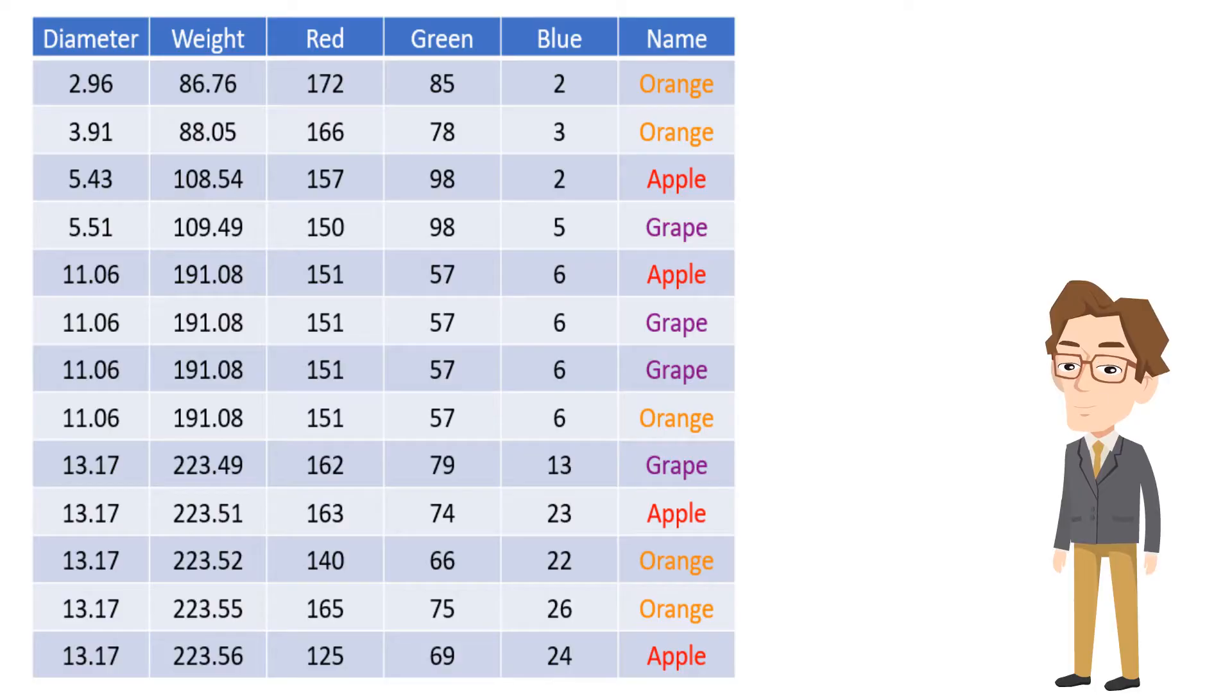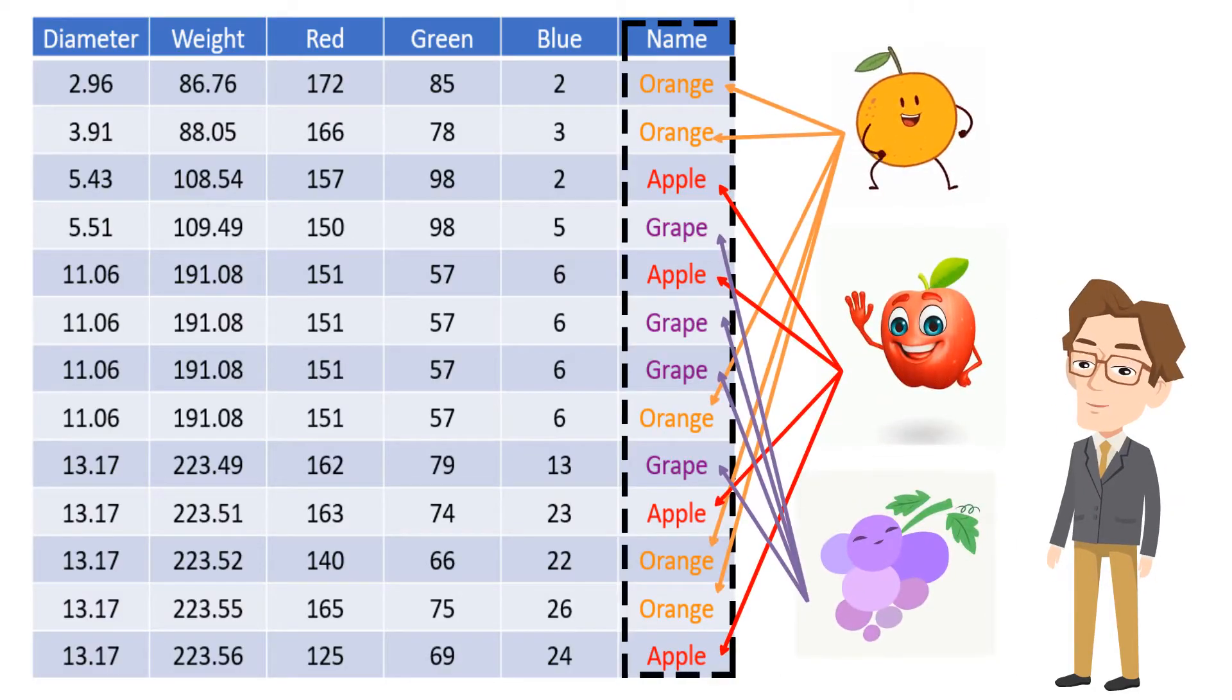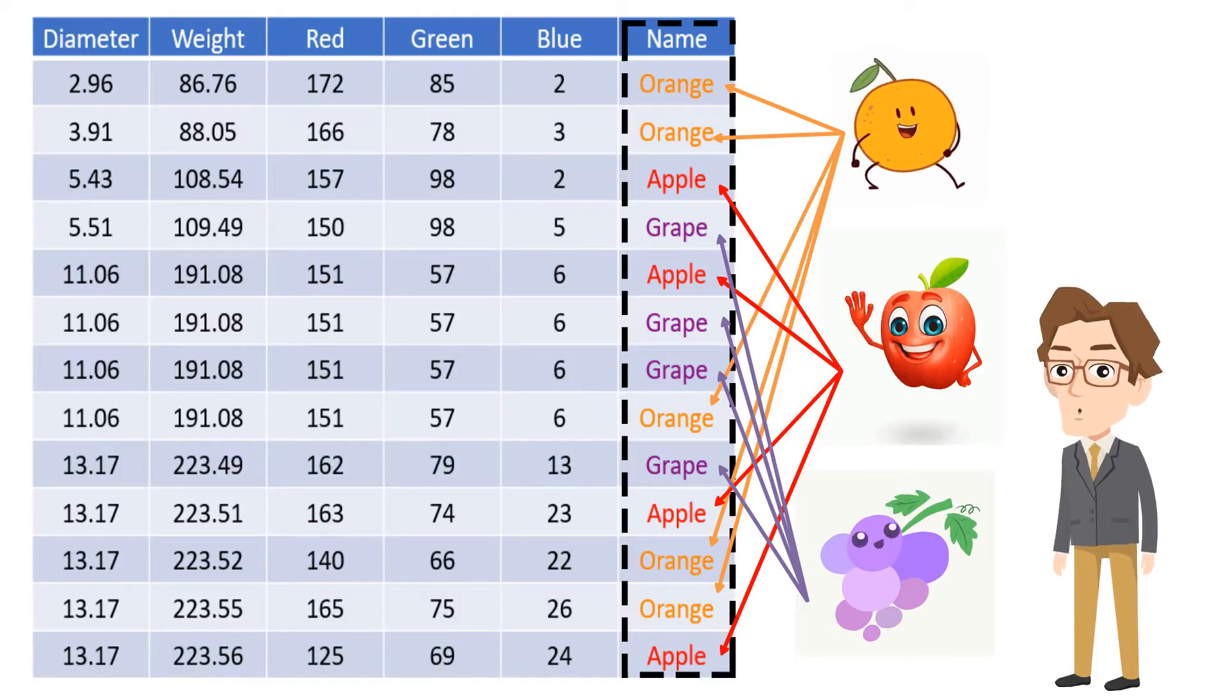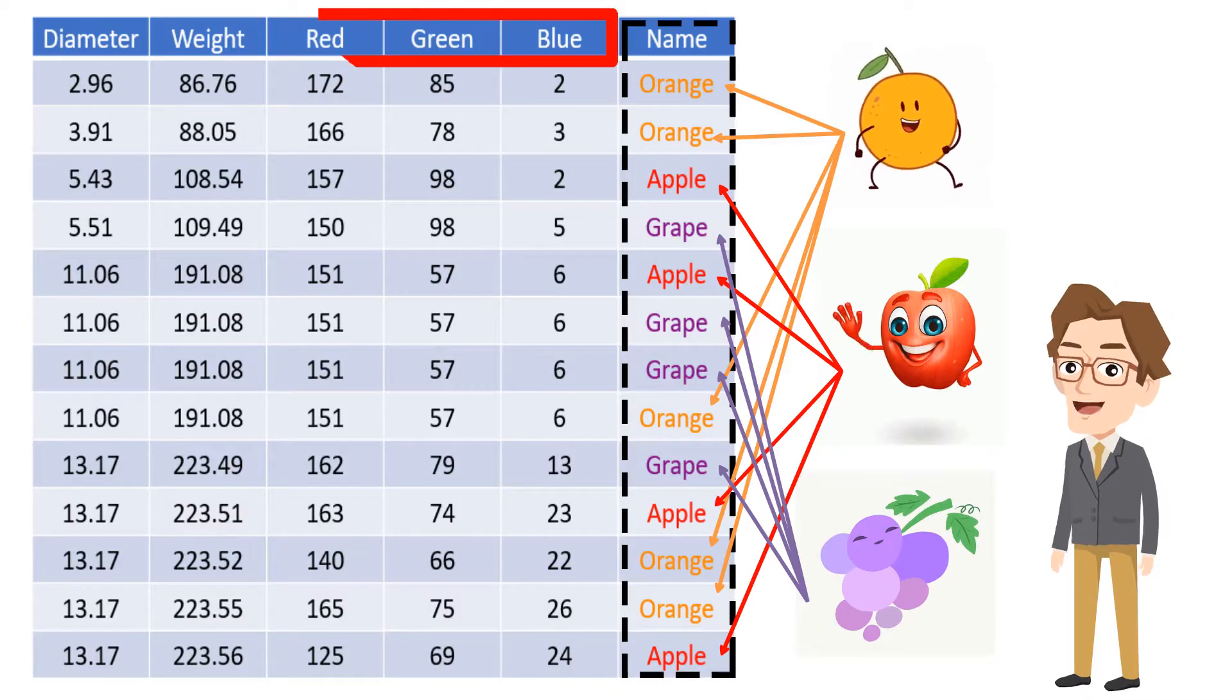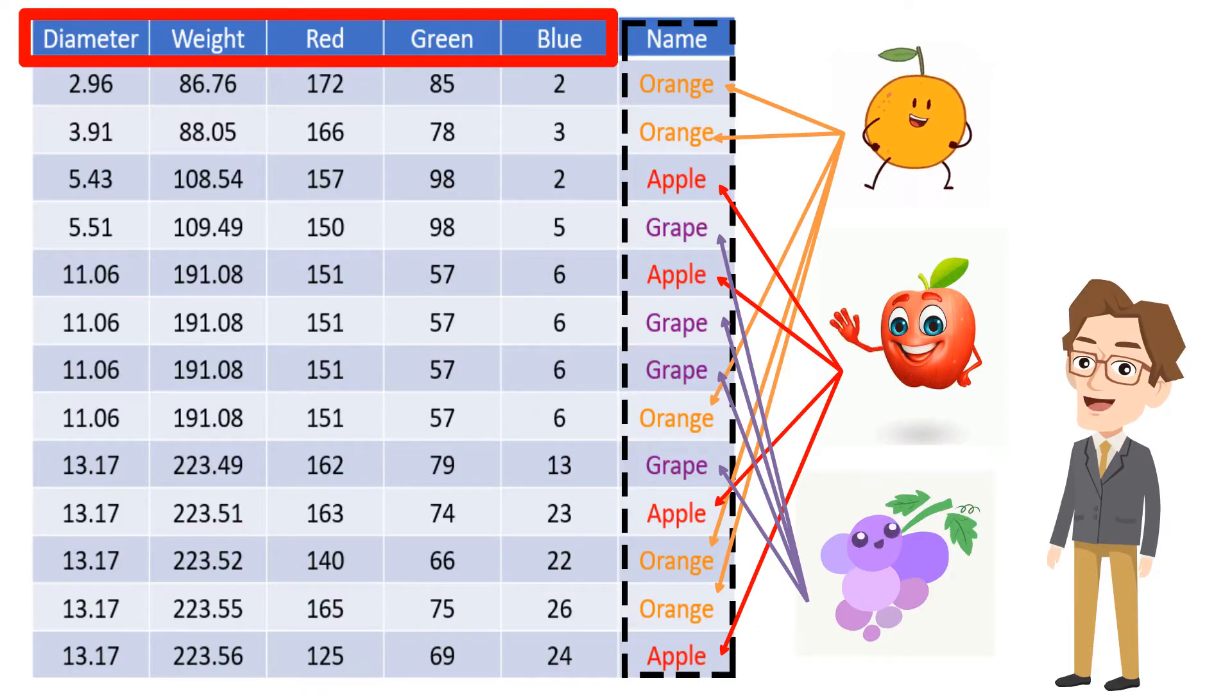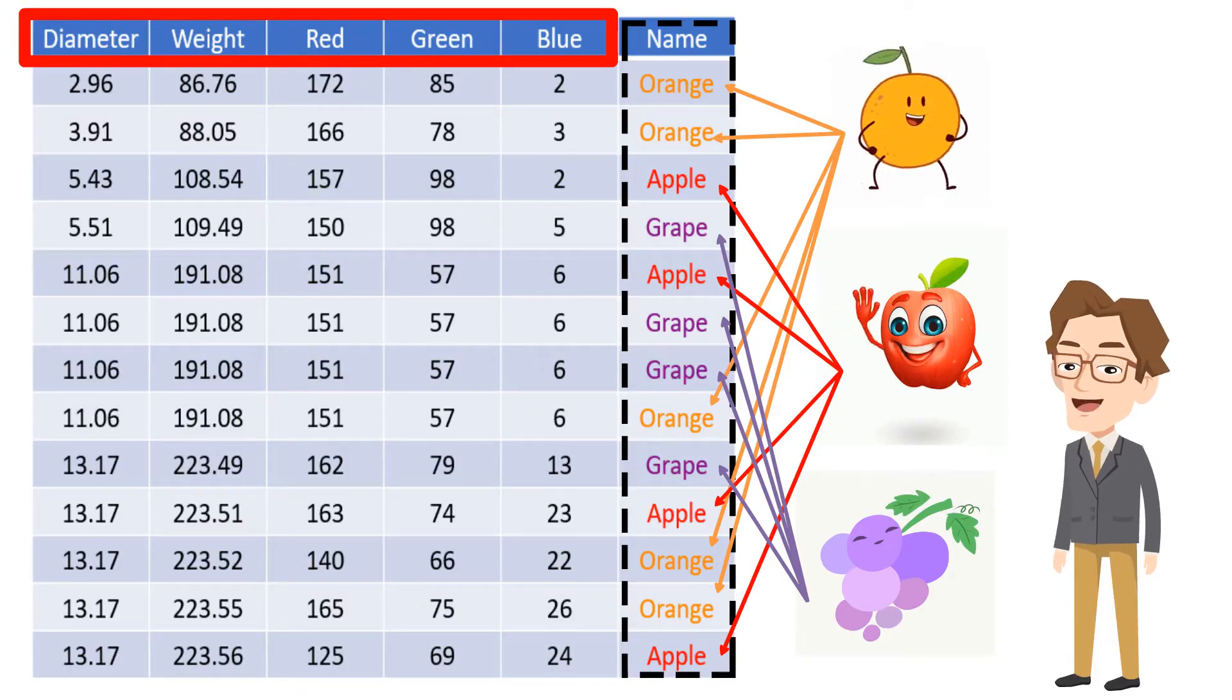In classification problems the output values of target class are discrete. Target value must be belonging to a class. In this example, target values are fruit names which depend on color, diameter, and weight. In classification we classify our data into classes, then can predict class for new data.